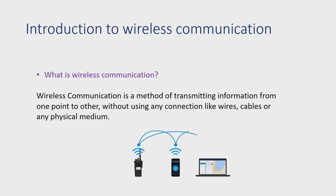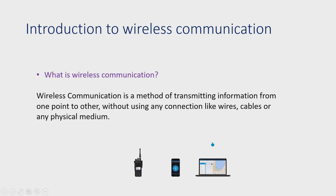Wireless communication involves transmission over a longer distance without wires. In this, air is used as a transmission medium. The examples of wireless communication systems are GPS receiver, remote controls, Bluetooth, Wi-Fi, etc.